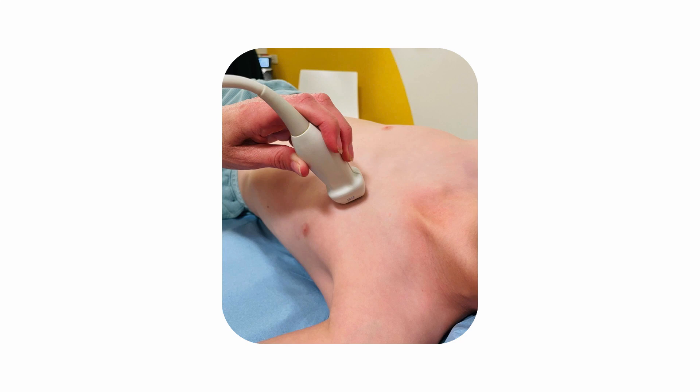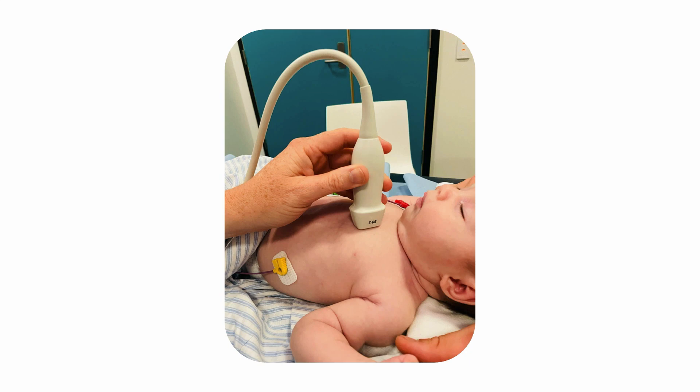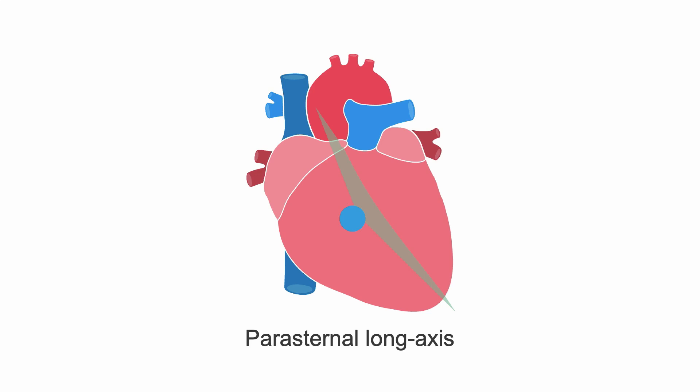Parasternal views are best achieved by positioning your patient in the left lateral decubitus position and placing the probe in the third or fourth intercostal space to the left of the sternum. The parasternal long axis view of the left ventricle is acquired with the probe marker at approximately 10 o'clock pointed towards the right shoulder. You are aiming to keep the interventricular septum in a horizontal plane perpendicular to the ultrasound beam.